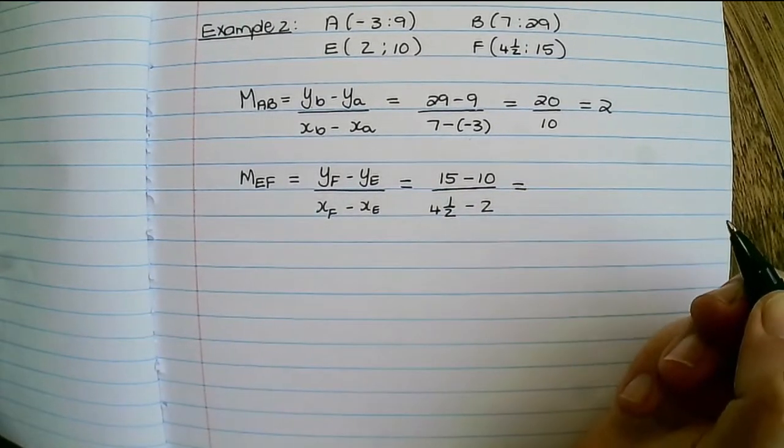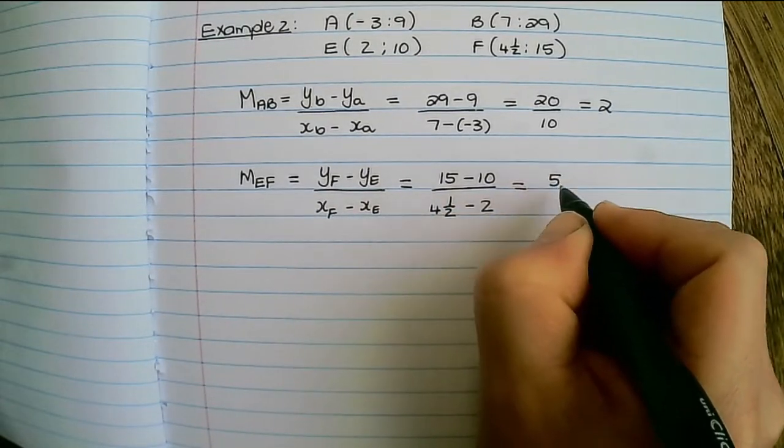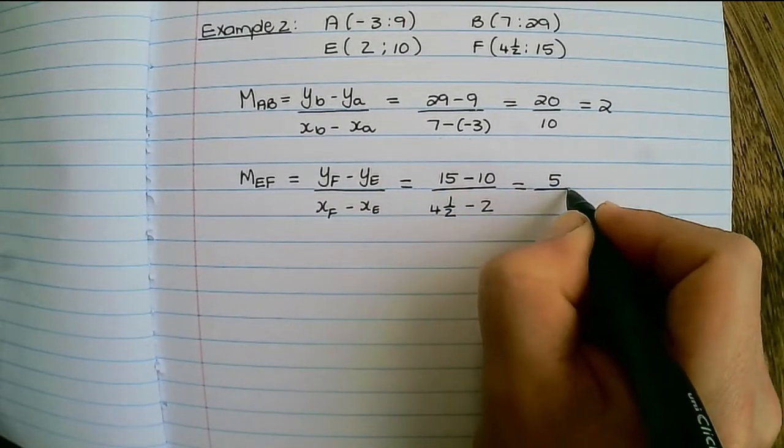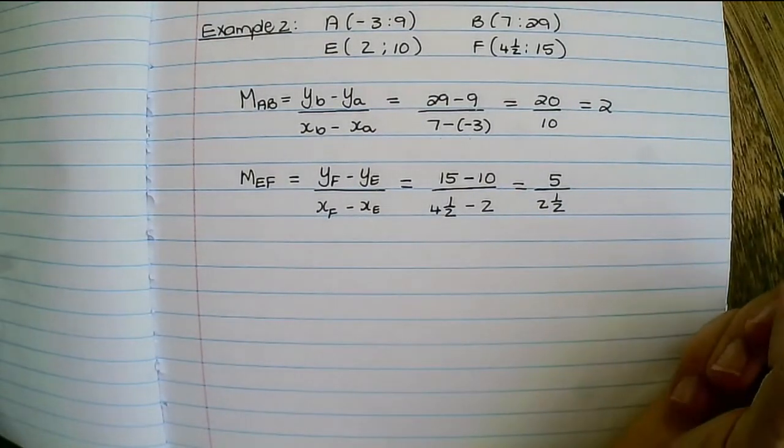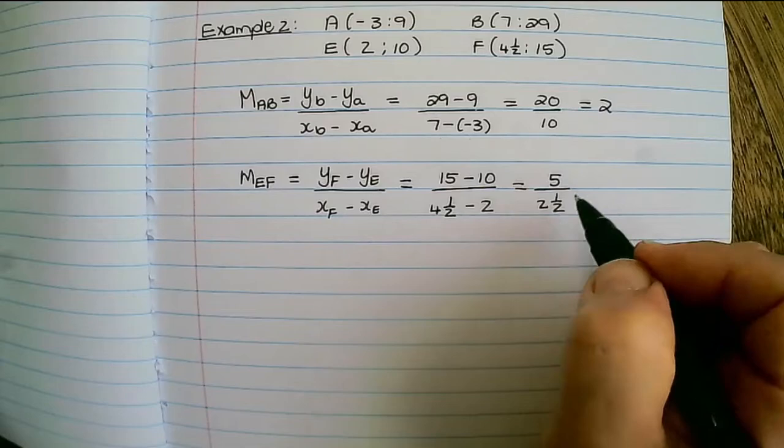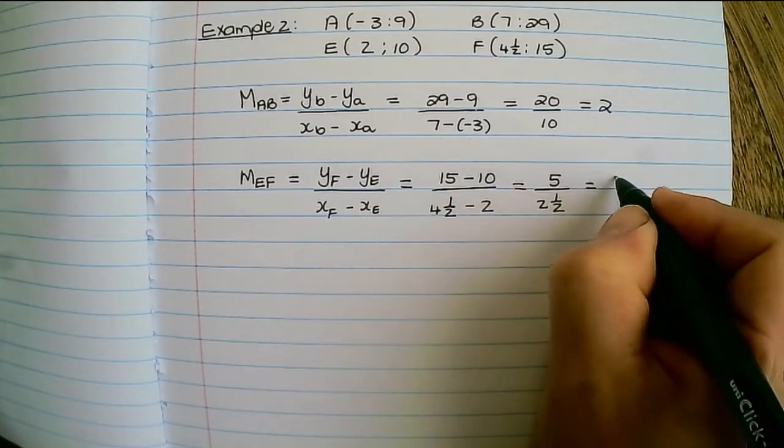And when I simplify, I have 5 in the numerator and 2 and a half in the denominator. And 5 divided by 2 and a half is equal to 2.